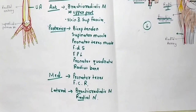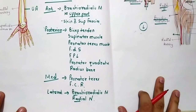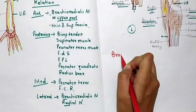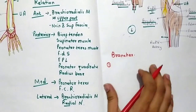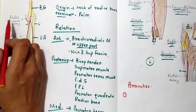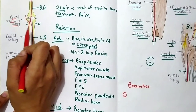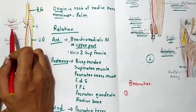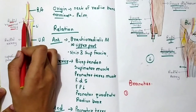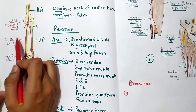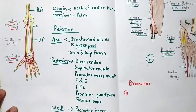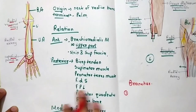Now let's talk about the branches. There are four branches of the radial artery. First is the radial recurrent, which goes upward — 'recurrent' means going in the opposite direction — and it participates in the anastomosis around the elbow. Second are the muscular branches. Third is the superficial palmar branch, which participates in the superficial palmar arch. Fourth is the palmar carpal branch.